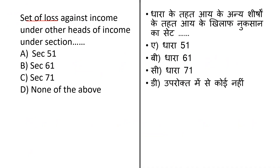The first question is about the set-off of losses under the head 'Other Sources' of income. The options given: first is Section 51. Section 51 of the Income Tax Act 1961 provides that any advance forfeitable by the seller of the property is deductible from the cost of the asset.